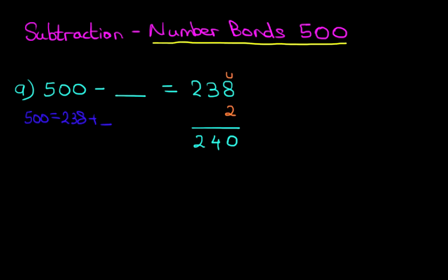Now we're going to look at the tens. We've got 240, which is 4 tens. What number do we add to make this 0? We know from our number bonds that 4 plus 6 makes 10, so we add 60. That makes 300. 240 plus 60 is 300.